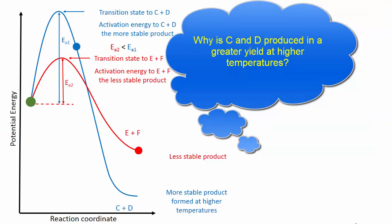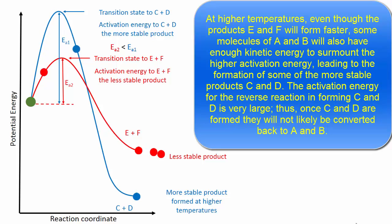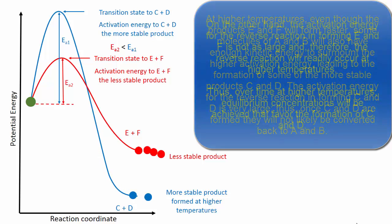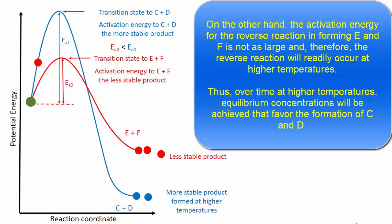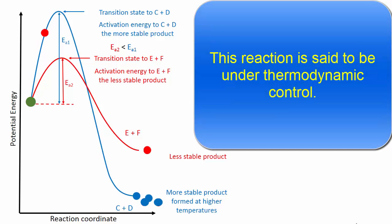Why is C and D produced in greater yield at higher temperatures? At higher temperatures, even though the products E and F will form at a faster rate, some molecules of A and B will also have enough kinetic energy to surmount the higher activation energy, leading to the formation of some of the more stable products C and D. The activation energy for the reverse reaction in forming C and D is very large. Thus, once C and D are formed, they will not likely be converted back to A and B. On the other hand, the activation energy for the reverse reaction in forming E and F is not as large. Therefore, the reverse reaction will readily occur at higher temperatures. Thus, over time at higher temperatures, equilibrium concentrations will be achieved that favor the formation of C and D. This reaction is said to be under thermodynamic control.